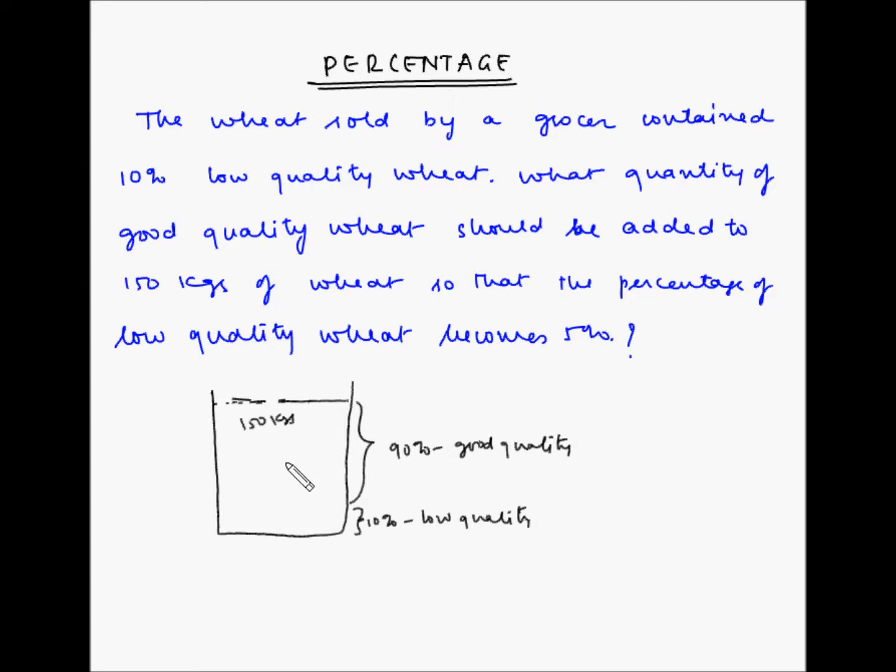So 10% of 150 is equal to 0.1 into 150 which is equal to 15 kgs. So out of this total 150 kgs of wheat, 15 kgs is low quality wheat.